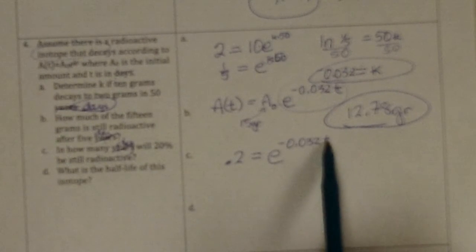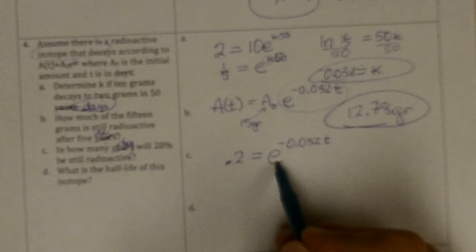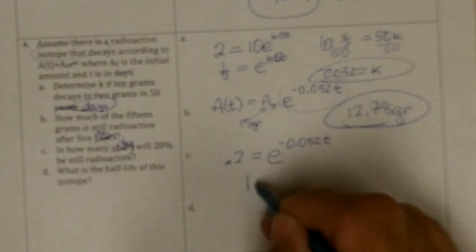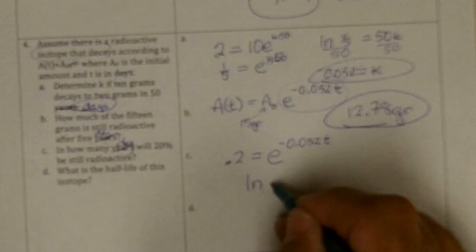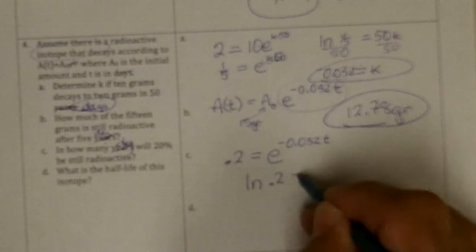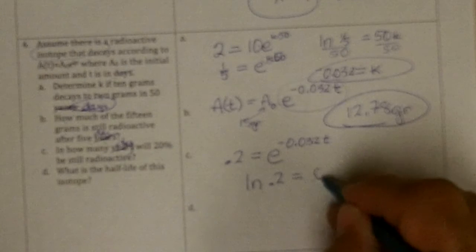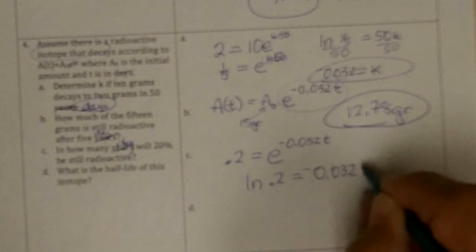I want to get e to the negative 0.032 times the number of days to be 0.2. This is an exponent, so I change it to a log equation. It's base e, so it would be natural log. To what power do I take e to get 0.2? And the answer is negative 0.032t.